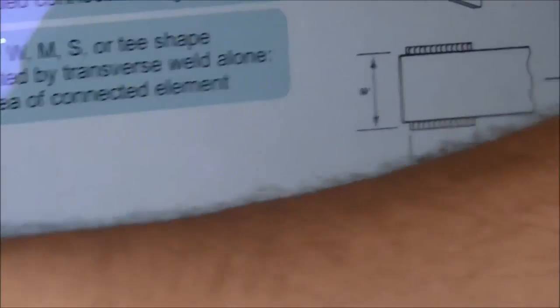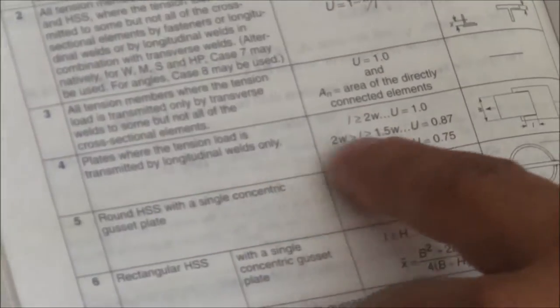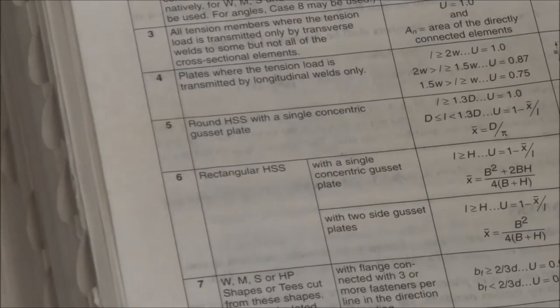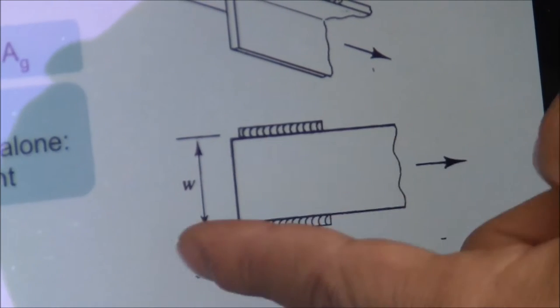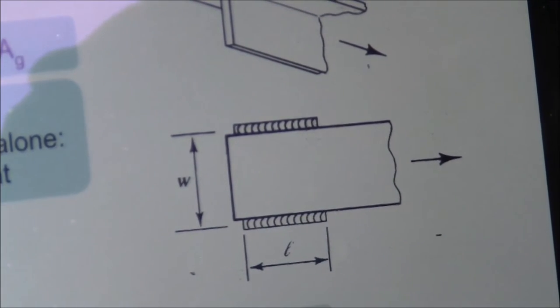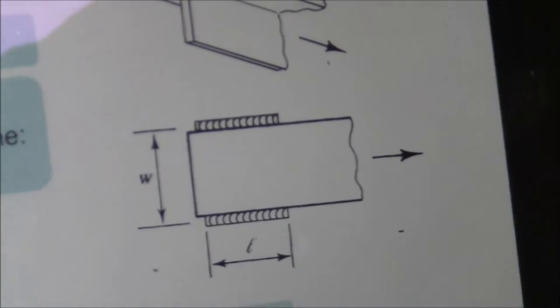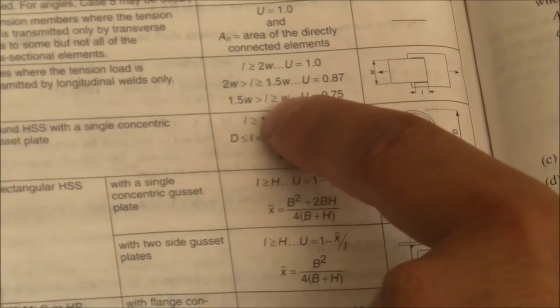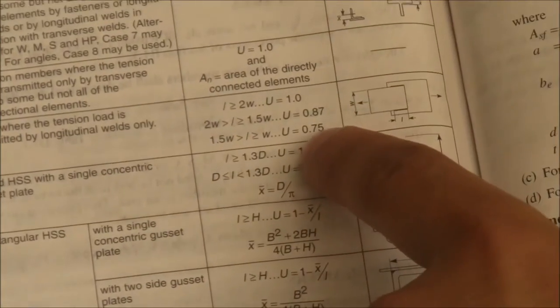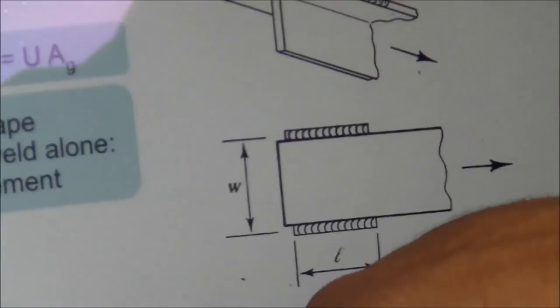For welded connections with tension load transmitted by longitudinal welds only: if weld length L is greater than 2W (transverse spacing), U = 1.0; if L is between 1.5W and 2W, U = 0.87; if L is between W and 1.5W, U = 0.75. You cannot use L less than W. These cases are clarified in the slides corresponding to Table D3.1.